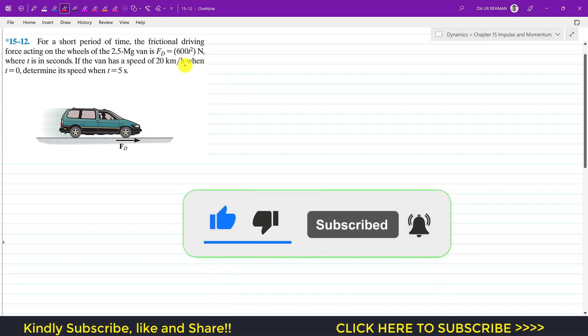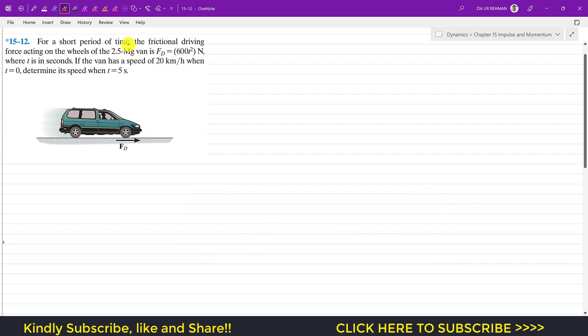Now we are going to solve this problem which says that for a short period of time, the frictional driving force acting on the wheels of the 2.5 megagram van is 600t², where t is in seconds. If the van has a speed of 20 km/h when t equals 0, determine its speed when t equals 5 seconds.